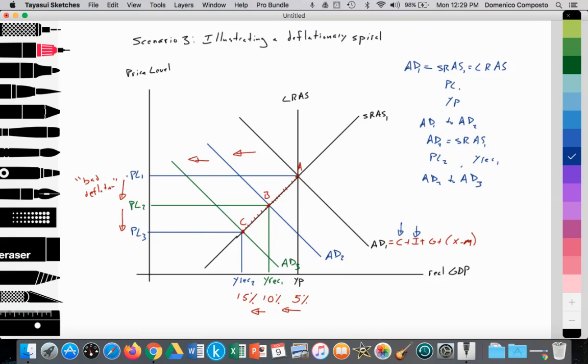Since the price level has fallen from PL1 to PL2 to PL3, this is all what we consider bad deflation due to that fall in aggregate demand. And since we continue to fall deep into the recession, there's a potential for the economy to go deeper into that recession. And that's what we mean by a deflationary spiral.